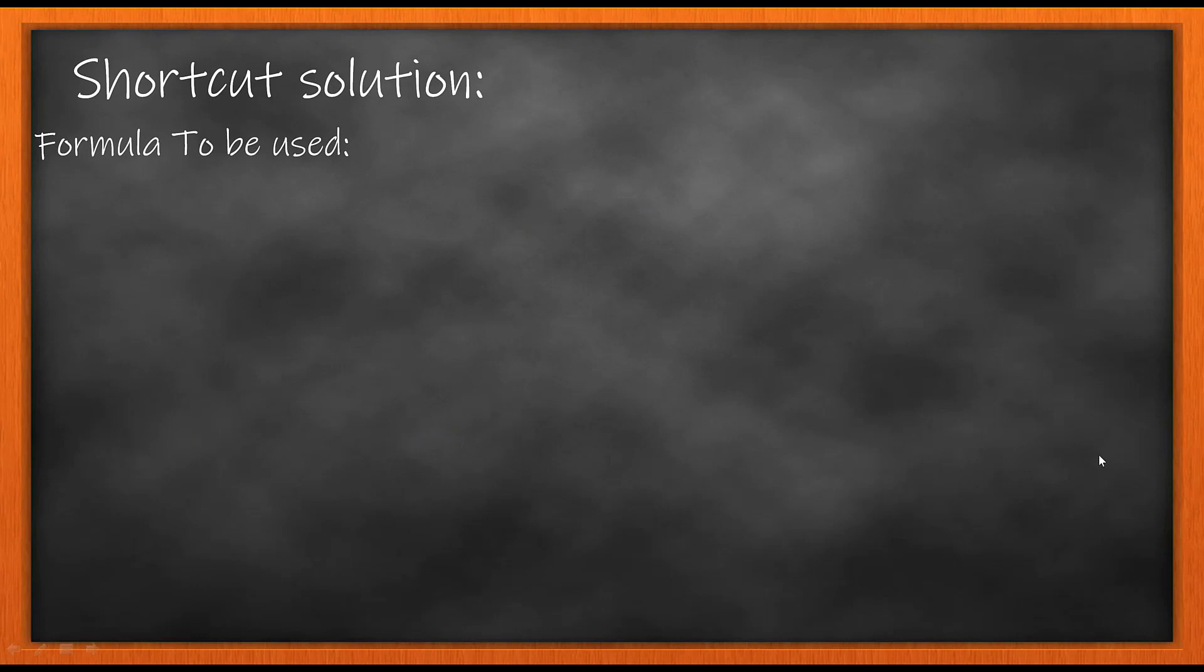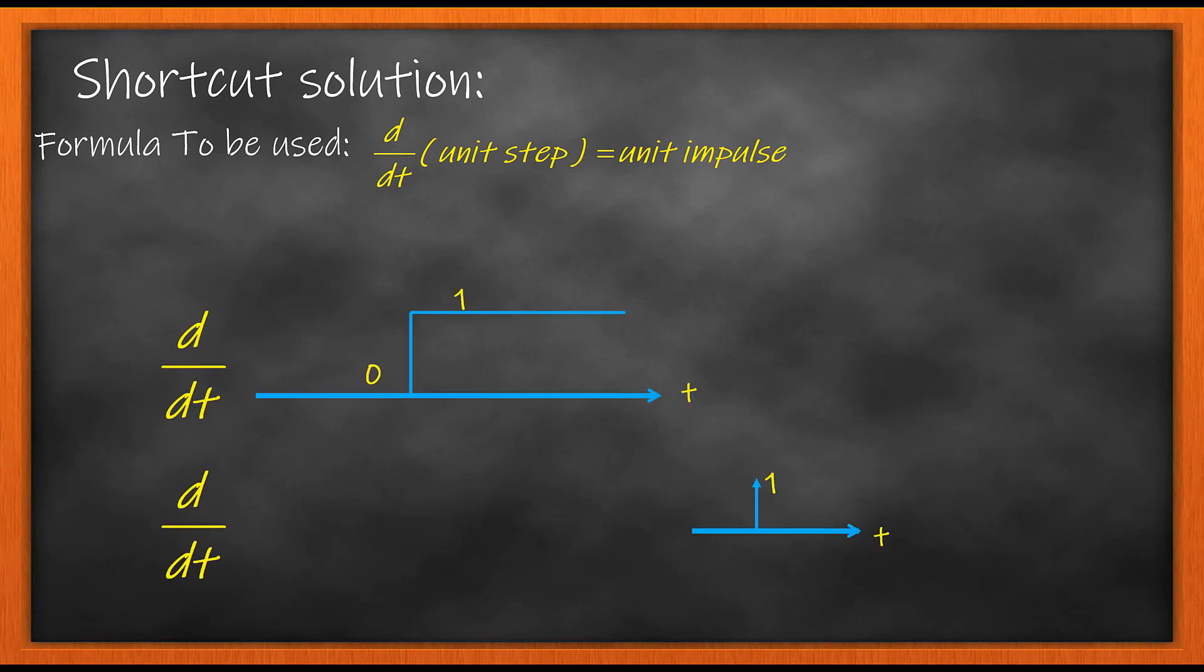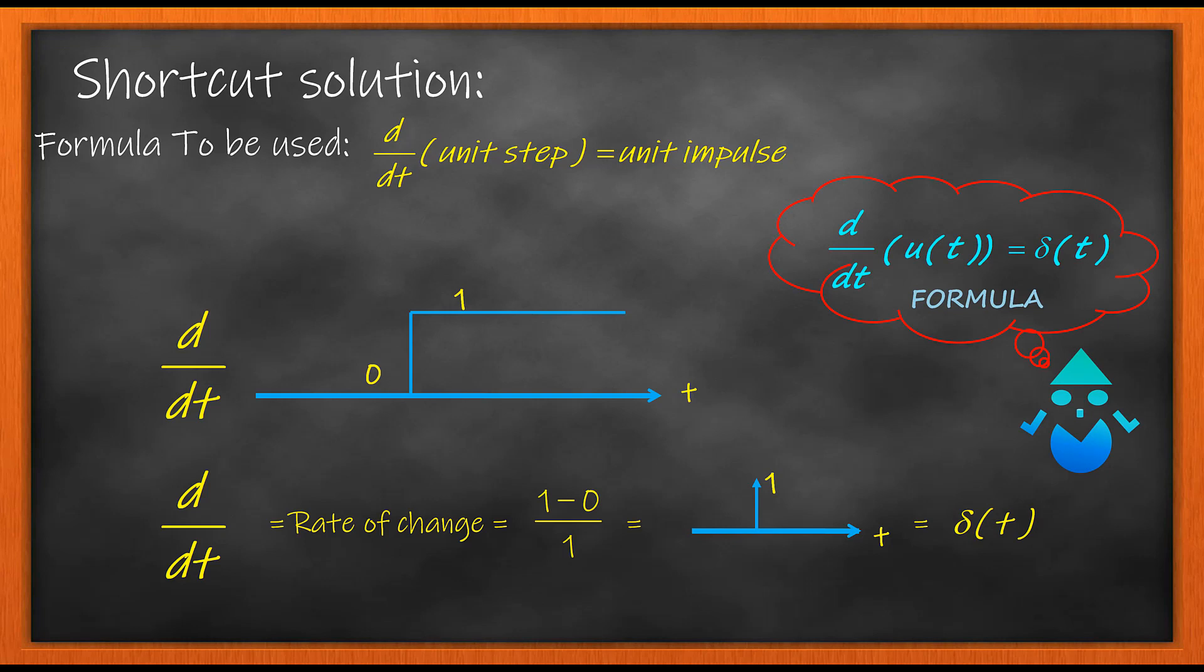To solve this question you have to know a single most important formula: d/dt of unit step equals unit impulse. The derivative defines a function with rate of change, and taking the rate of change of a unit step function gives you the delta function. So the most important formula is d/dt of u(t) = δ(t).